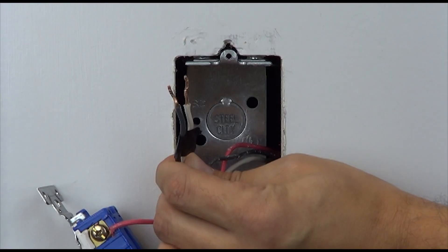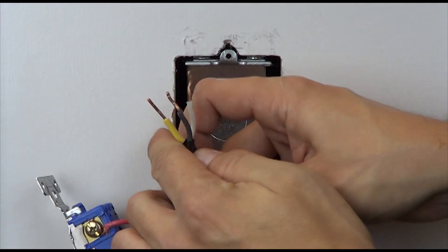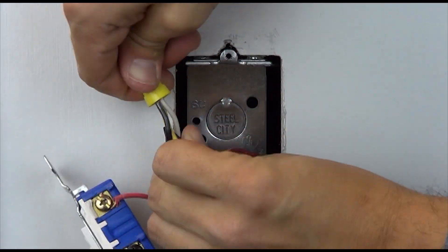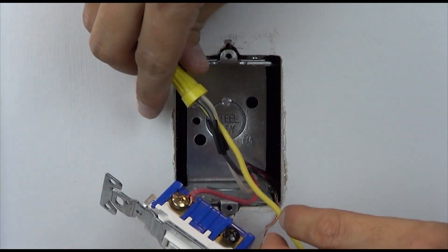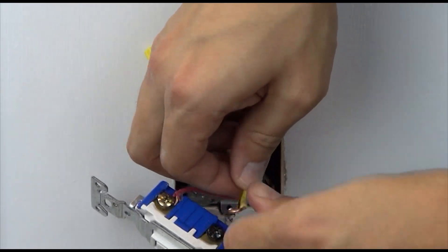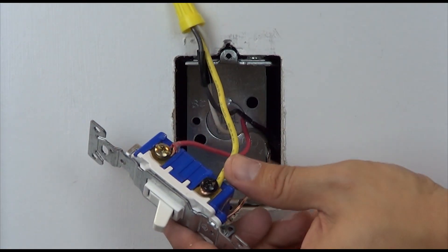Using a wire connector, combine the included yellow jumper wire with the tagged wire and the other wire you just removed from the switch. Connect the other end of the yellow jumper wire to the different colored screw on your switch, where the tagged wire was originally connected.